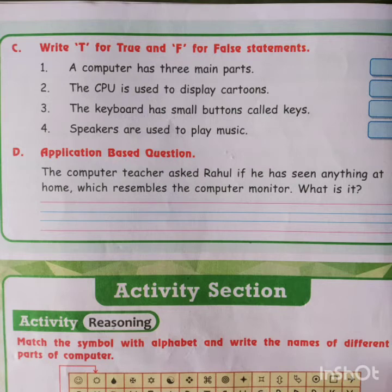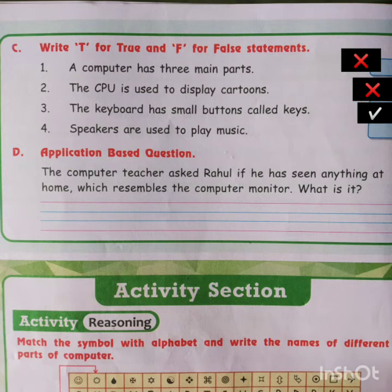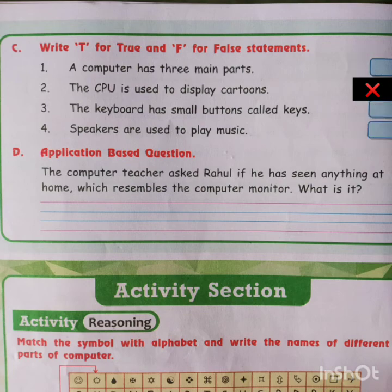Now moving to True and False questions. First: a computer has three main parts — False, a computer has four main parts. Second: a CPU is used to display cartoons — False, that is wrong. Third: the keyboard has small buttons called keys — True, this is the right answer. Fourth: speakers are used to play music — True, this is also the right answer.